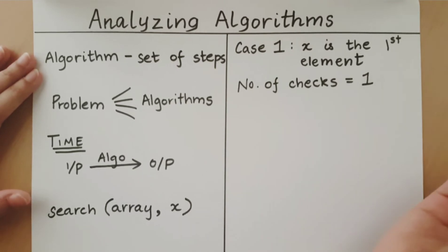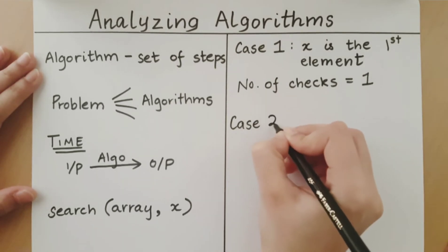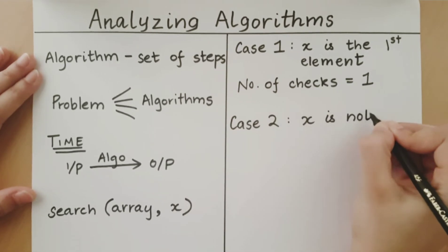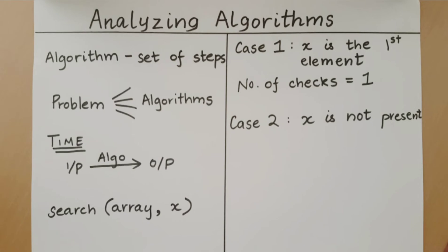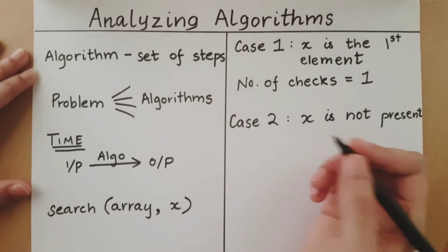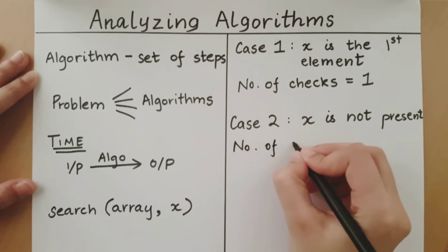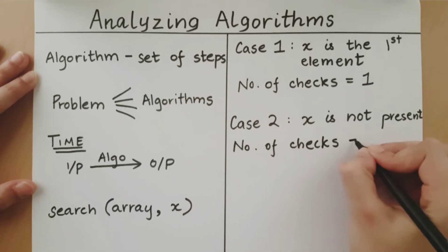Let us look at another case that this algorithm could face. Case 2 is x is not present in the array. In this case, the algorithm would have traversed through every element in the array, checking whether those elements are equal to x. None of the elements are equal to x and so the search will be returned as unsuccessful. So the number of checks made by this algorithm is equal to the number of elements. Let us say that the array has n number of elements. Then the number of checks will be equal to n.